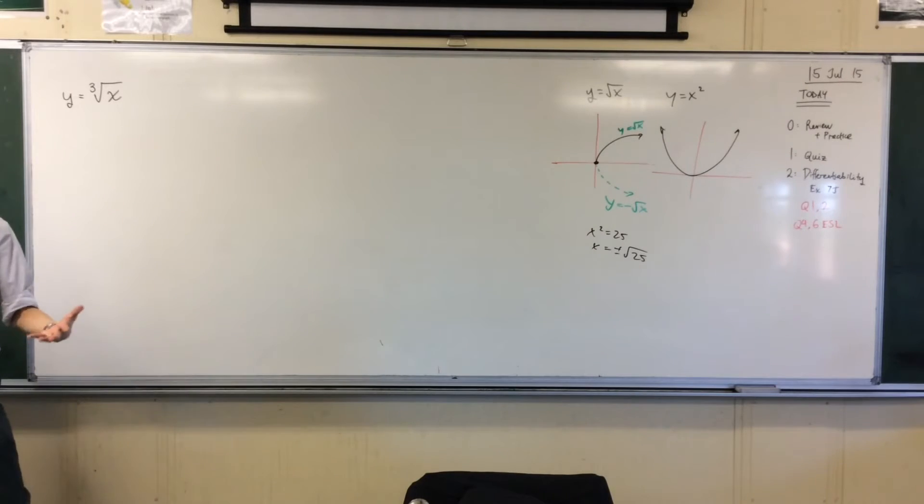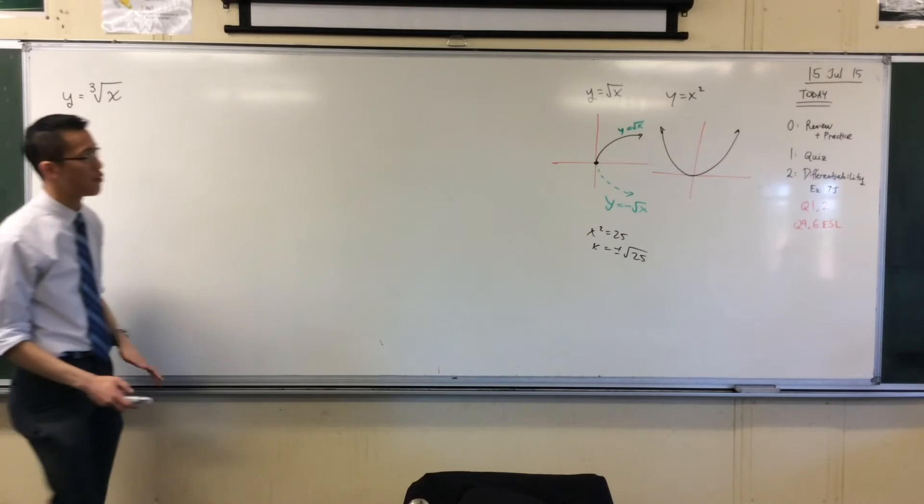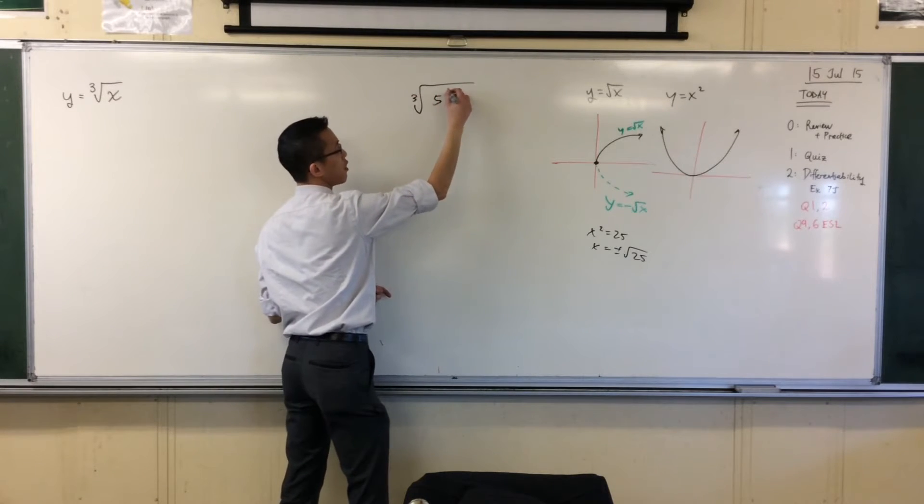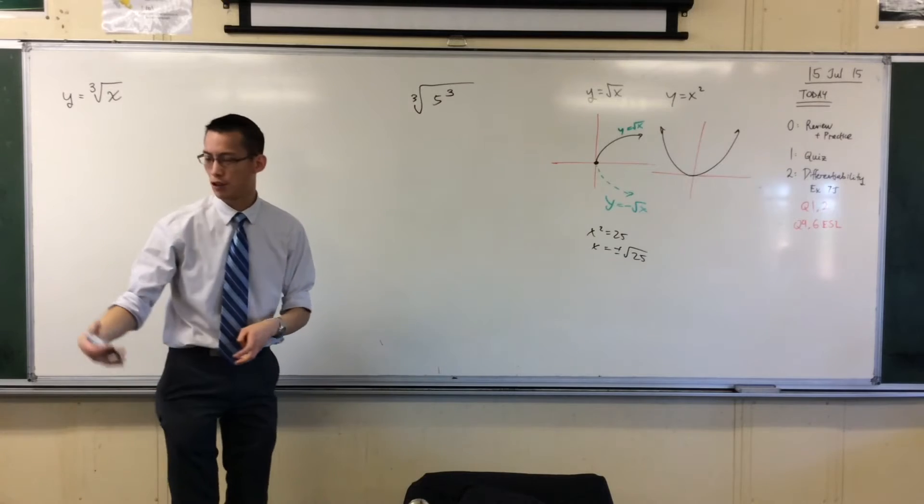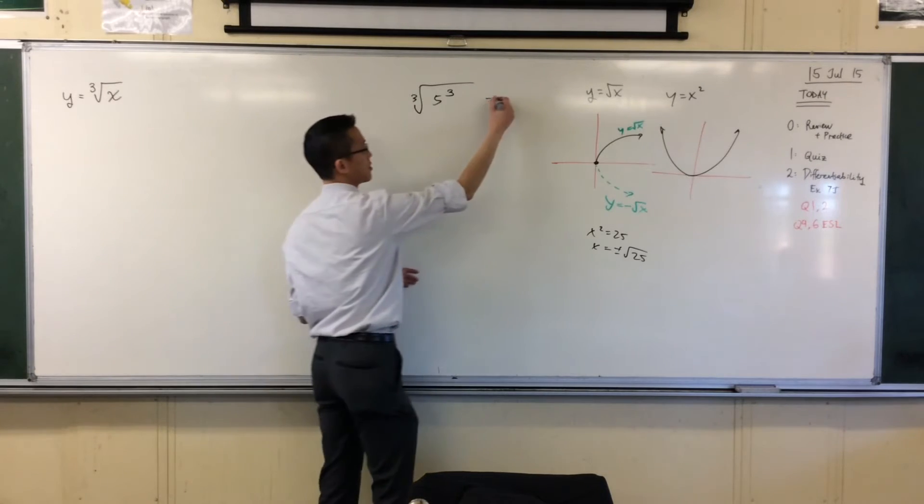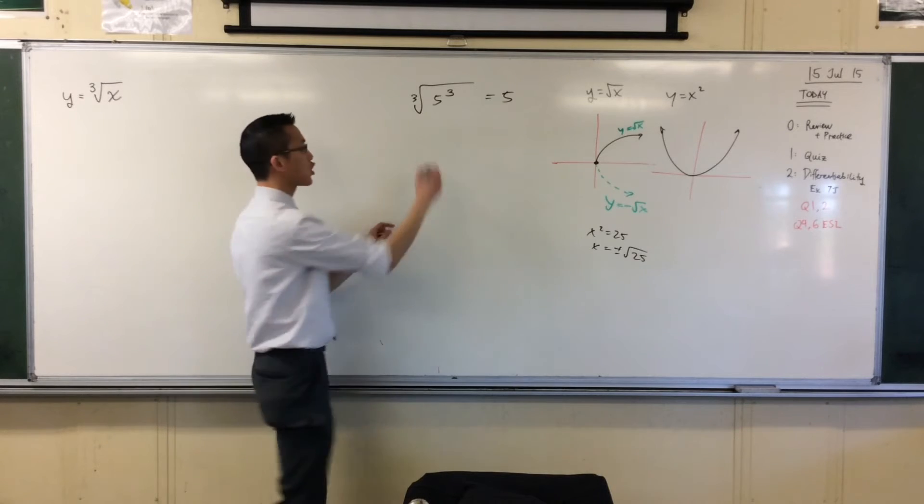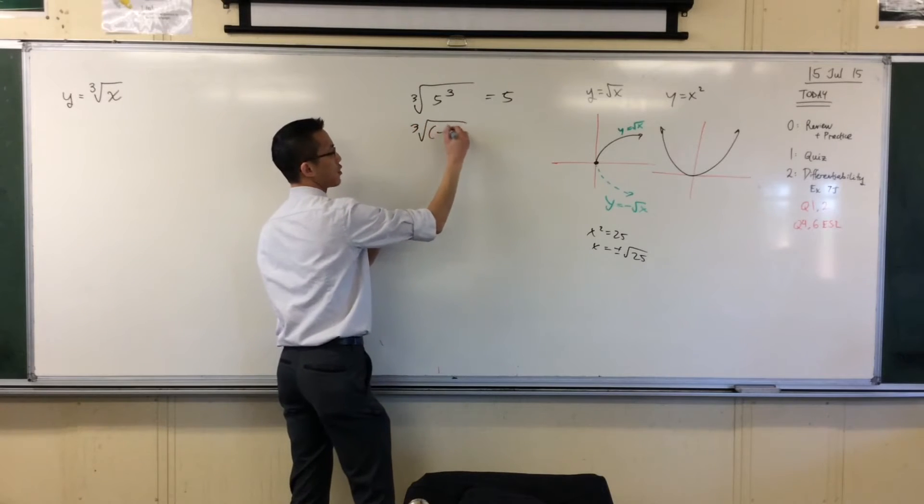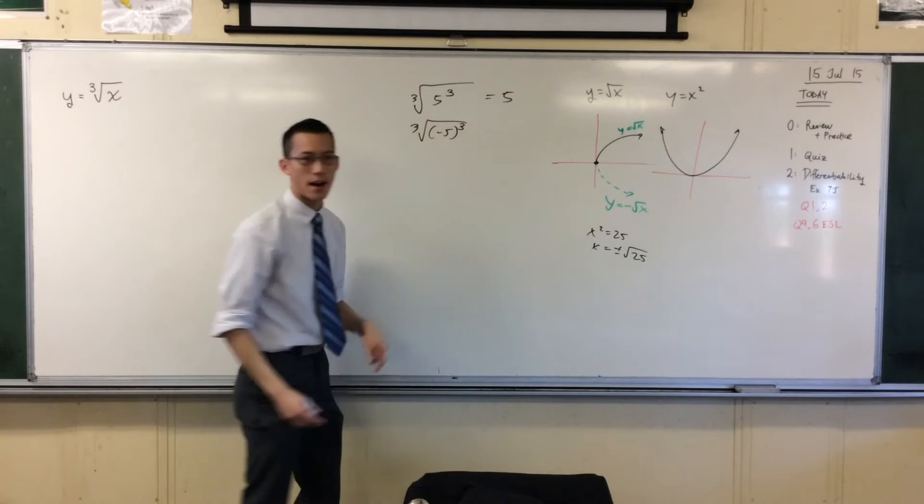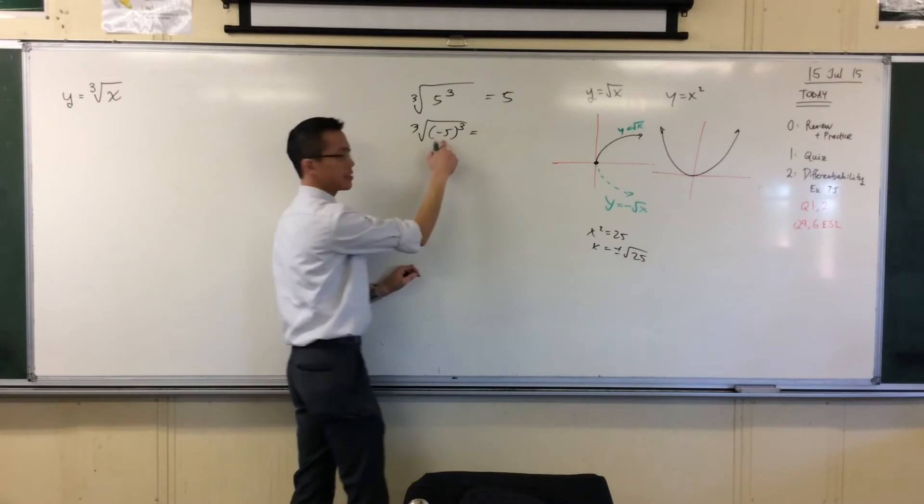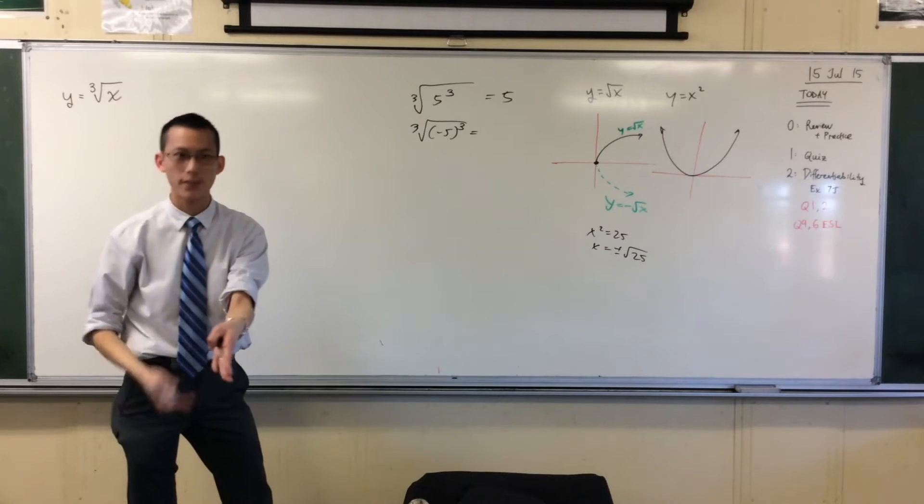But something more interesting, perhaps more useful happens when you think about a cube root. Because, take any real number you like, let's go back to our example of 5. If I do the cube root of 5 cubed, well, 5 cubed is 125. After you take the cube root, you come back to 5.